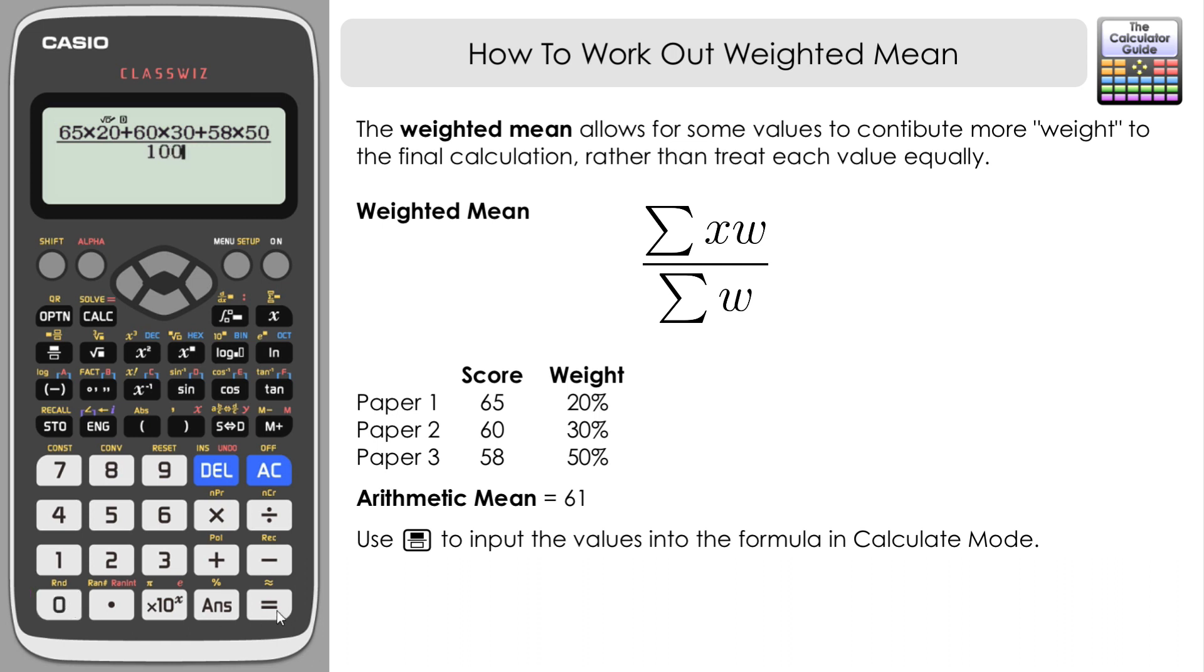Press equals and here we have our weighted mean: 60. We can see it's actually one lower than the arithmetic mean, so that's taking into consideration the fact that we scored the least on paper 3 and that was worth the biggest weight, the biggest contribution to our final mark. So actually our average mark per paper was 60 rather than 61, which is more representative.